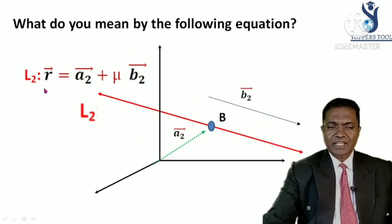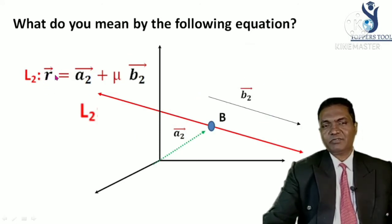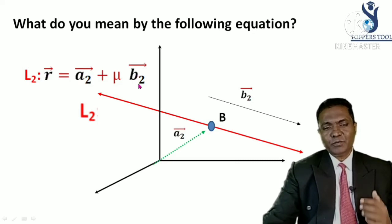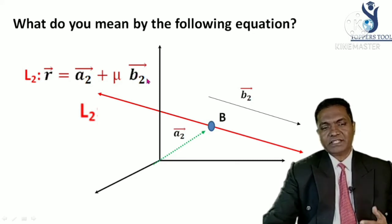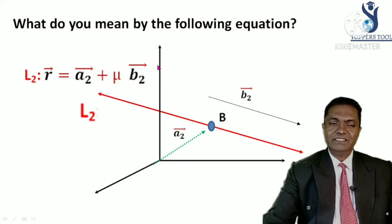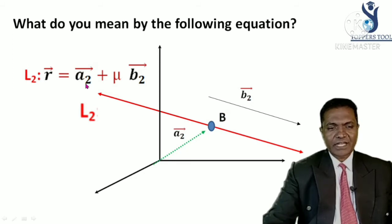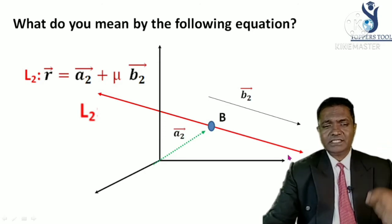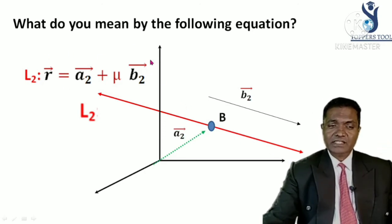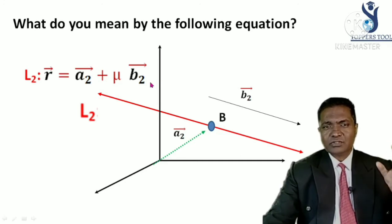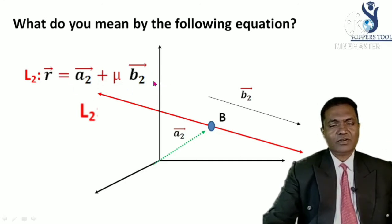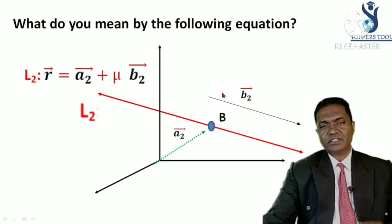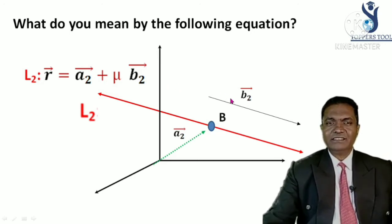Similarly, if you have another line — vector R equals vector A2 plus mu times vector B2 — this is a line passing through a point B whose position vector is A2 and parallel to vector B2. This information is essential: looking at the equation, you should be able to tell what it represents and what the parameters or vectors stand for.